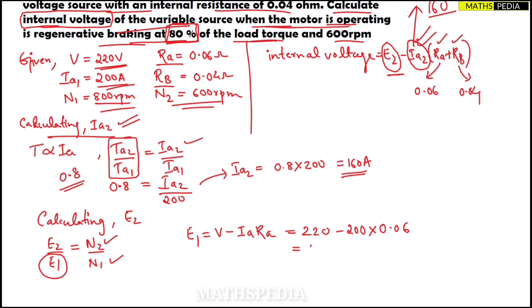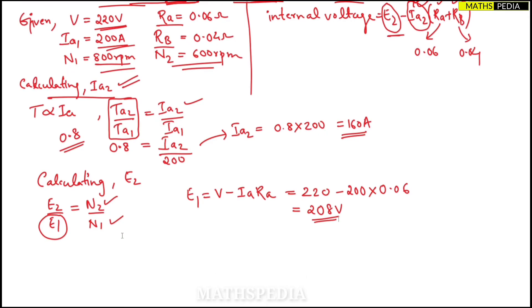So this gives the answer as 208 volts. E1 I also got. Now I can just substitute. N2 is 600, N1 is 800, E1 I got just now, that is 208.